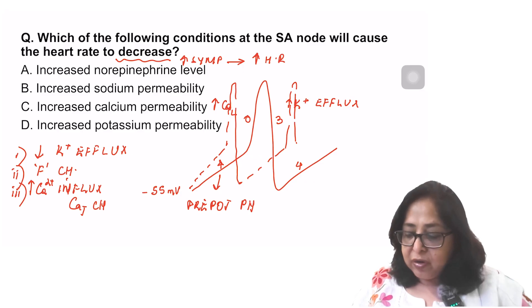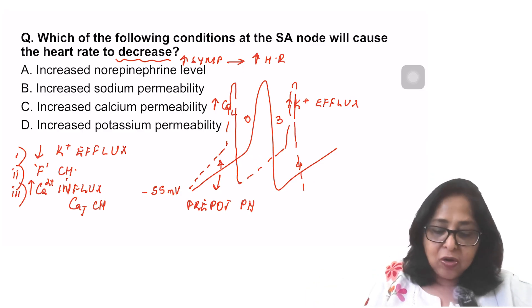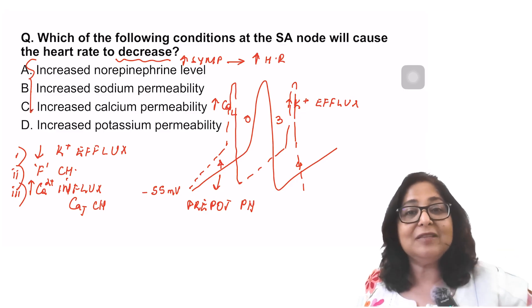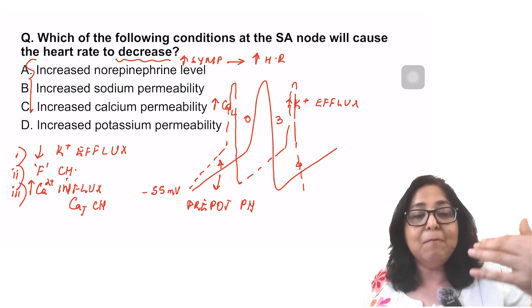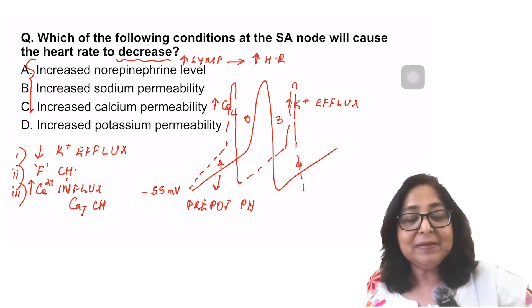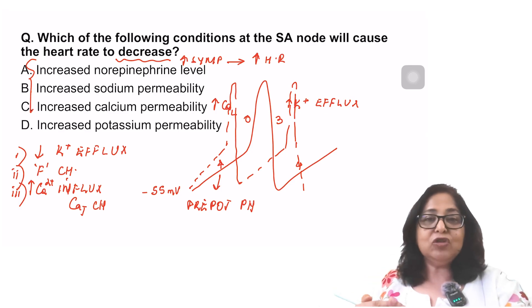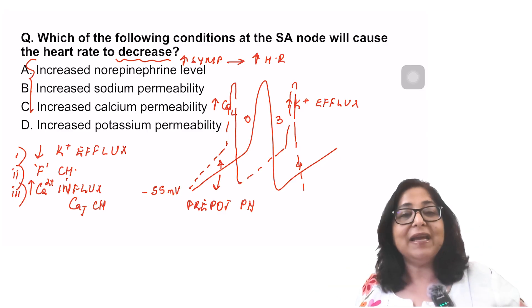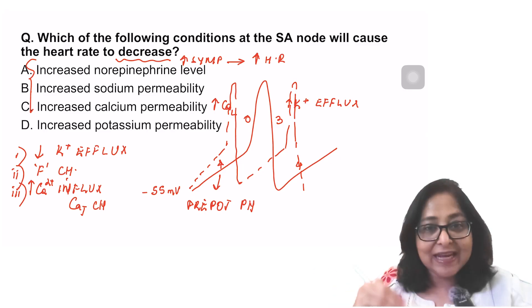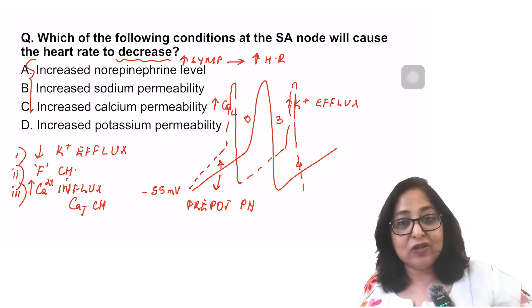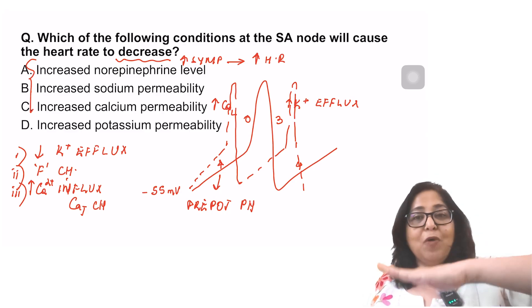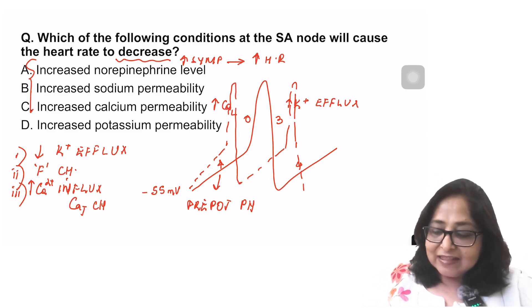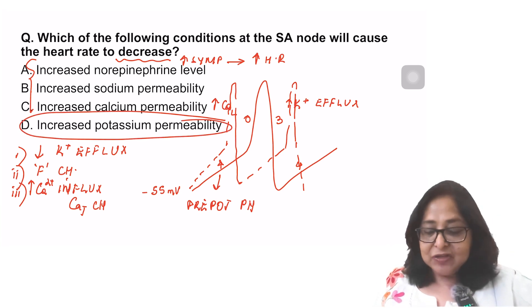So sympathetic stimulation, norepinephrine, increased sodium permeability, calcium permeability, all three will increase the heart rate. But if I increase potassium permeability, that means I cause more potassium to leave the cell. Increasing permeability means that particular ion will go from higher to lower concentration. By increasing sodium and calcium permeability, sodium and calcium will come from outside to inside the cell and the cell will gain positive charge. But by increasing potassium permeability, potassium will go from inside to out, so cell will lose positive charge. Remember, in phase 4, I want a net gain of positive charge. If the cell starts losing positive charge, the slope of phase 4 will reduce and the heart rate will decrease. So answer to this is D.